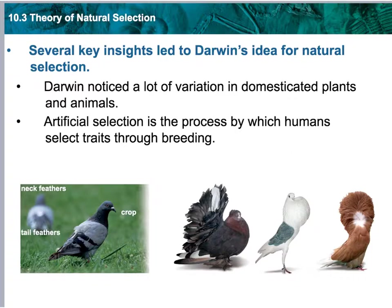Who does the selecting for natural selection? The environment. The environment does the selection — that is very important. The environment creates certain situations where either the organism has the adaptation or it does not. The organism is not going to gain it on the spot. The organism has to have that attribute genetically to deal with whatever the environment presents.